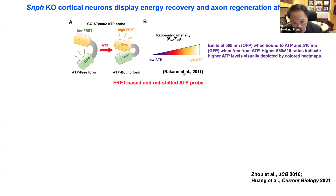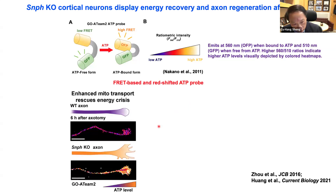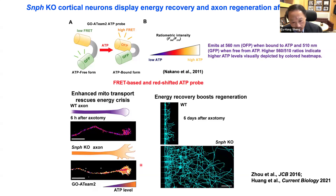To examine injury-induced energy crisis, we applied a ratiometric ATP probe named GO-ATeam2, generated by a Japanese group. The color-coded heat map reflects relative ATP level — blue represents low ATP and yellow or red shows high ATP. Following axon injury at six hours, wild-type neurons display energy deficit at axon tips, while Syntaphilin knockout neurons with enhanced mitochondrial transport rescued the energy crisis. Consistently, this energy recovery facilitated axon regeneration — wild-type neurons barely regrew six days after injury, but deletion of the Syntaphilin gene robustly enhanced axon regeneration.